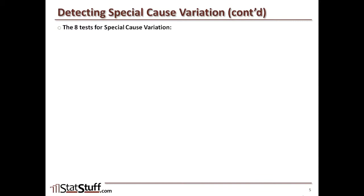If we apply these tests and one triggers an error in the control chart, there's a good sense it could be special cause variation, but it's not guaranteed. So be careful — these aren't intended to be hard and fast rules.